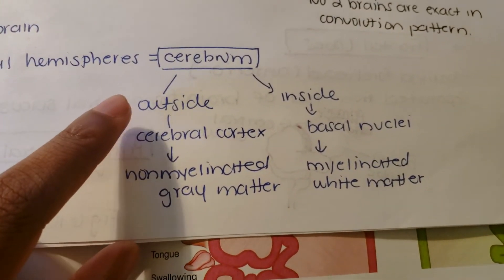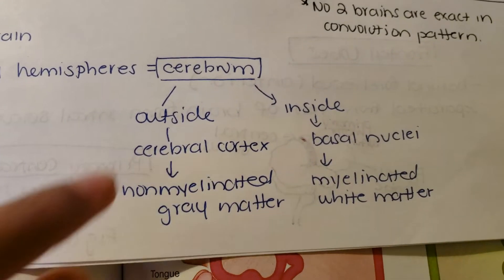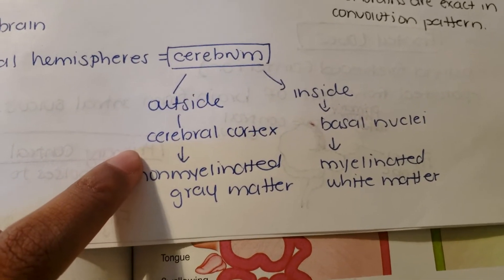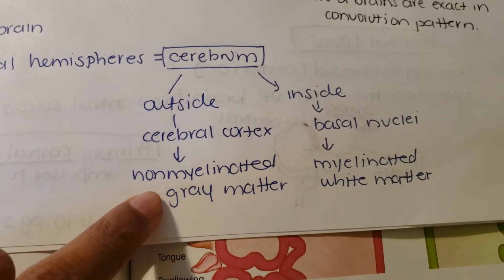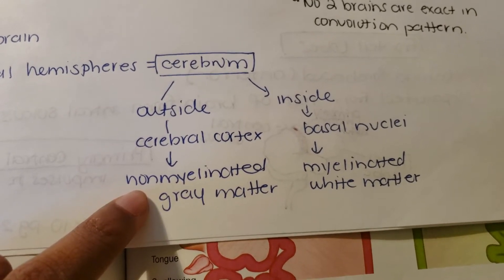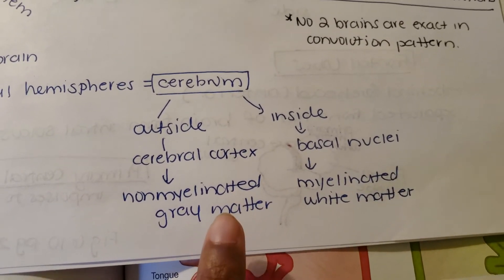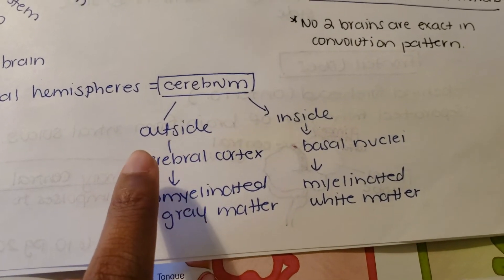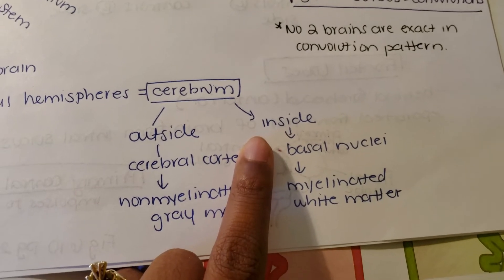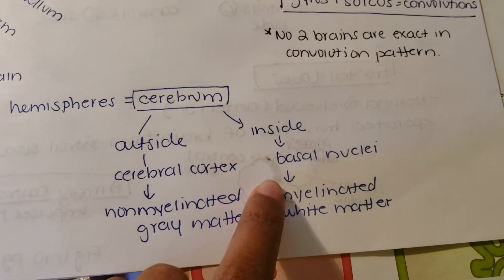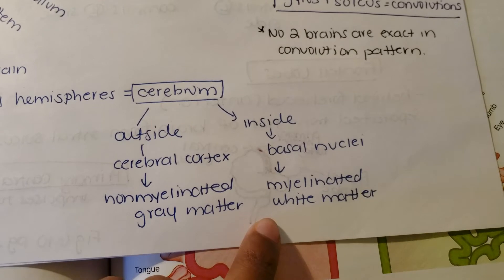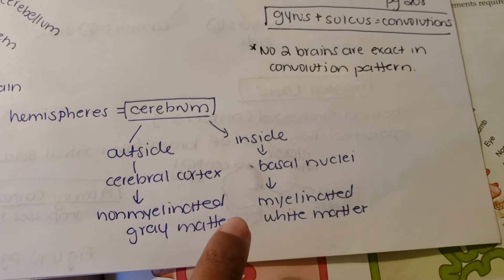There are two parts to the cerebrum — an outside and an inside. The outside is called the cerebral cortex, which is mostly made of gray matter because it has non-myelinated neurons. We talked about how myelinated tissue is white and non-myelinated tissue looks gray. On the inside of the cerebrum you have the basal nuclei, which is white matter because it is myelinated. These are the key anatomical features of the cerebrum.